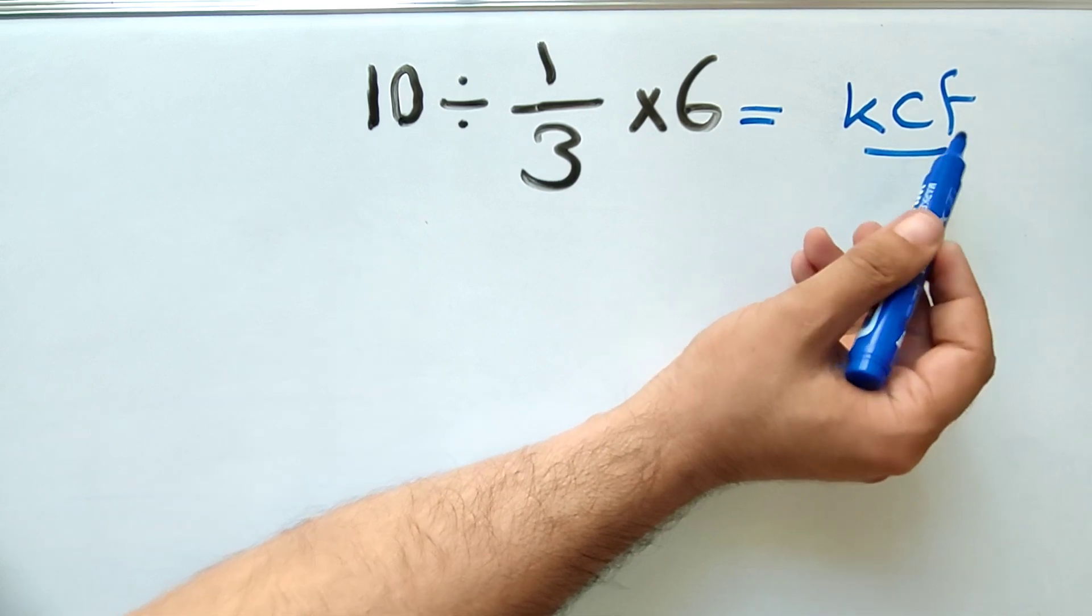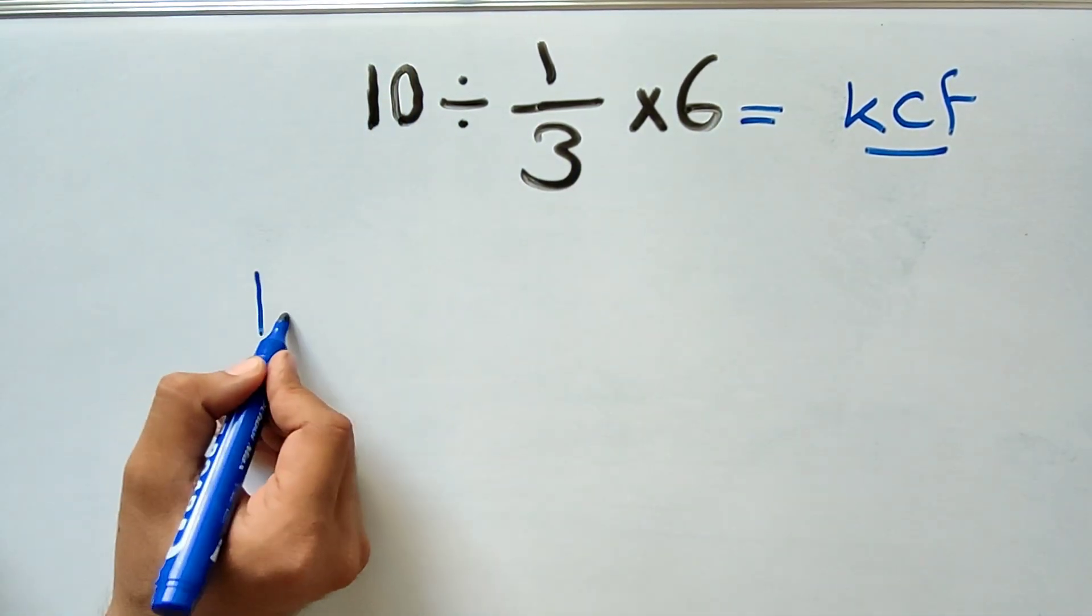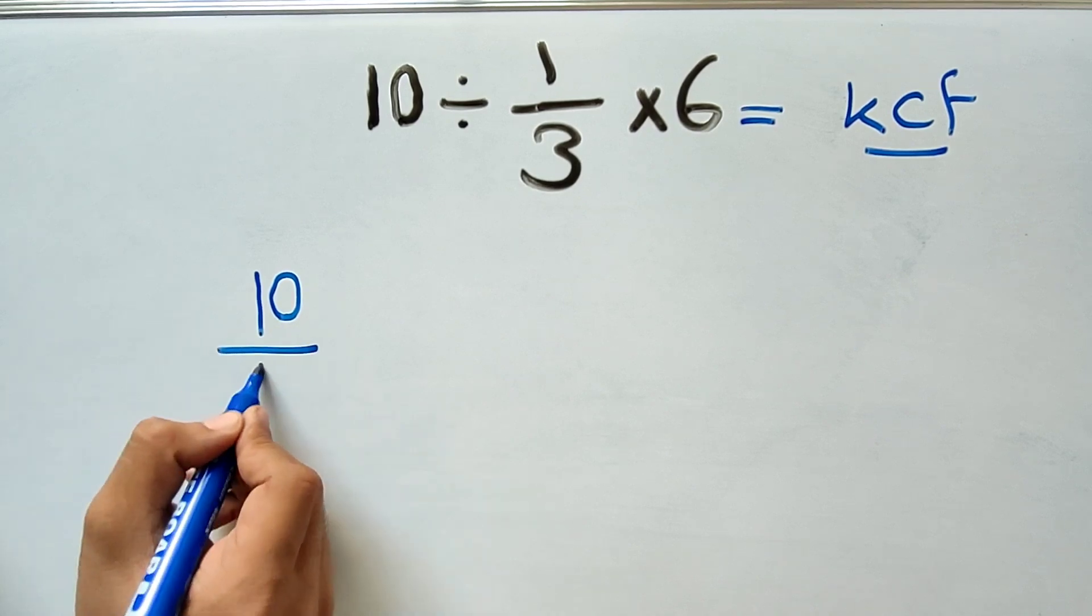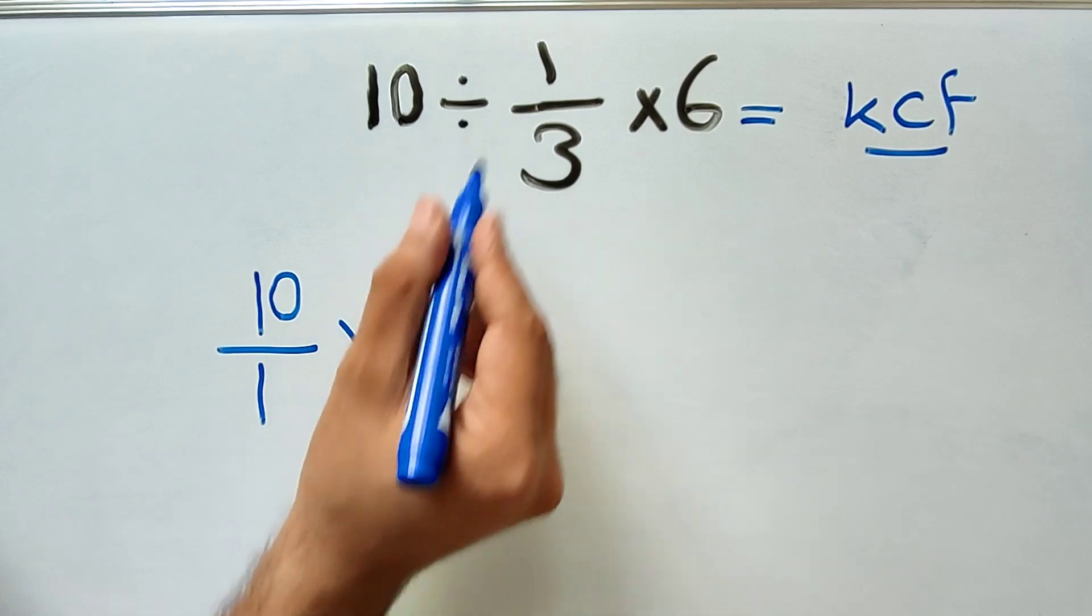So keep first fraction 10 over 1, change division to multiplication, and flip the next fraction 1 over 3 to 3 over 1.